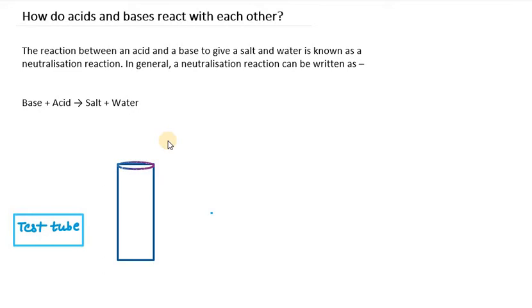When we get acid and base together, they form salt and water. Salt and water means that acid and base are neutralizing their effect on each other. If you have a place with more acid and want to reduce its effect, put some base on it. If you have more base, add acid to it. They neutralize each other's effect, so their reaction is called a neutralization reaction.